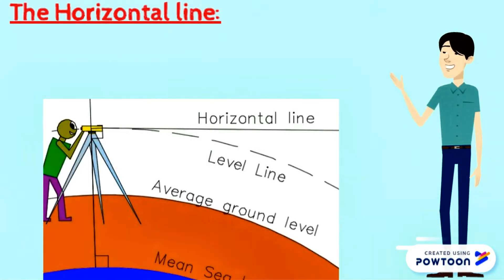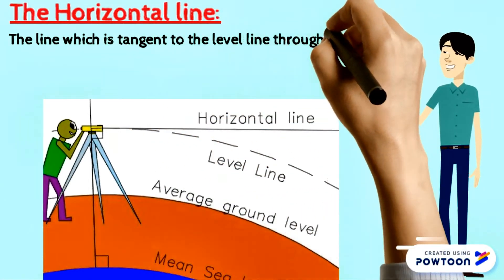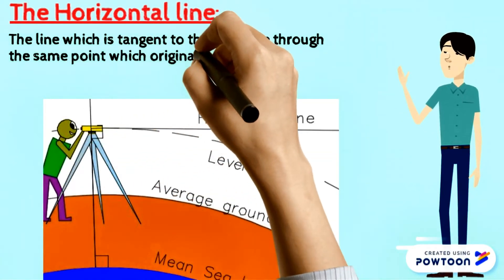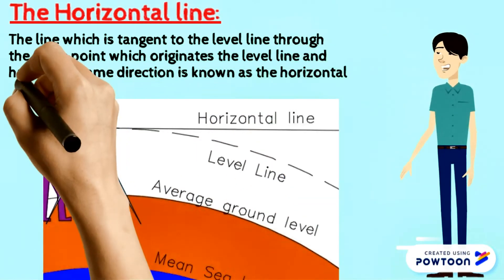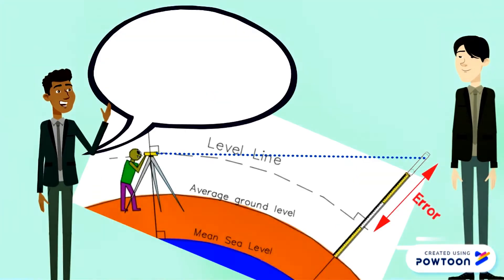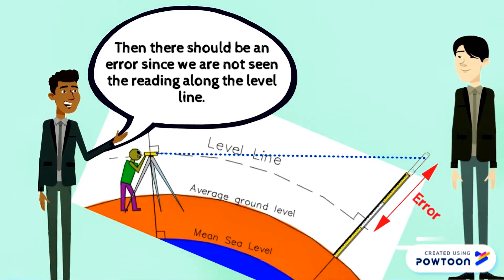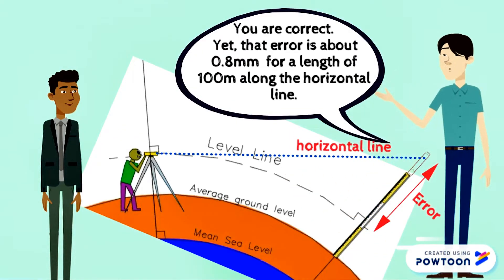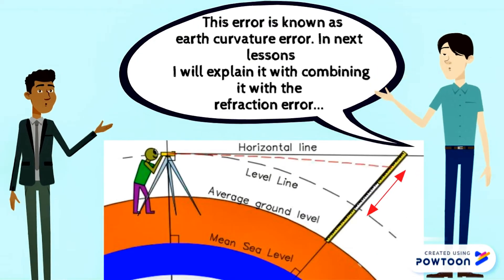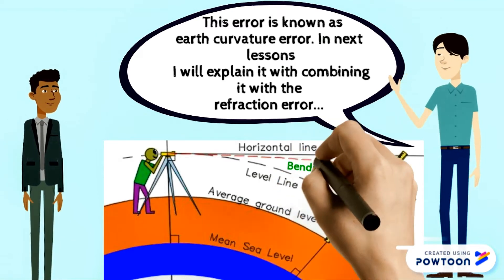The line which is tangent to the level line through the same point which originates the level line and having the same direction is known as the horizontal line. Then there should be an error since we are not seeing the reading along the level line. You are correct, yet that error is about 0.8 millimeters for a length of 100 meters along the horizontal line. This error is known as earth curvature error.